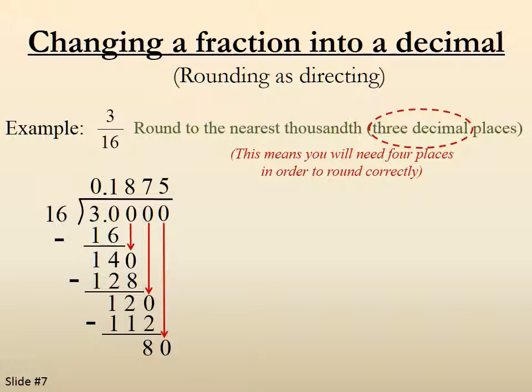16 into 80. 5 times. 5 times 16 is 80. We have 0.1875.